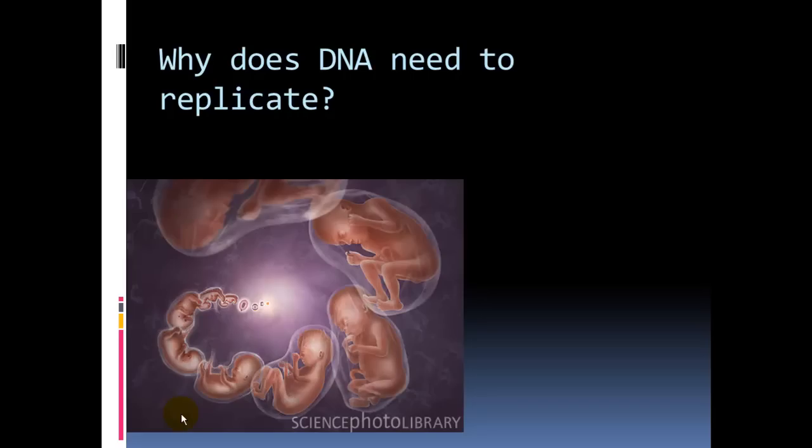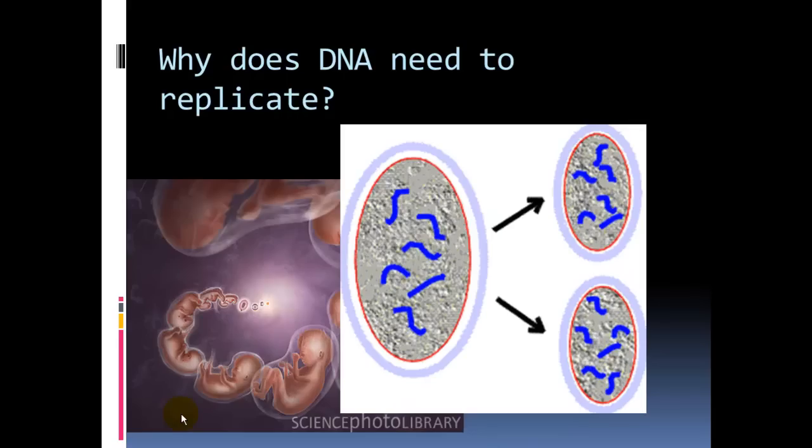DNA replication is the process that is going to allow for this. Cells divide. They grow to a maximum size, and then they split into two cells that have the identical, hopefully, DNA. And we should remember, this is cell division of this sort is called, referred to as, mitosis.